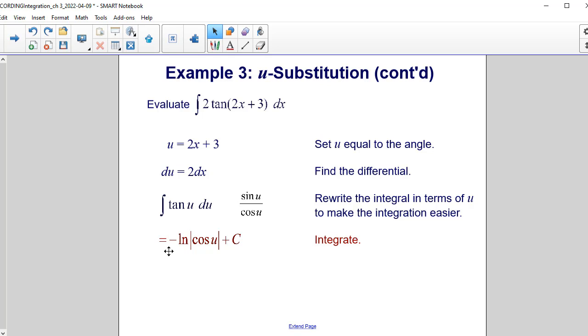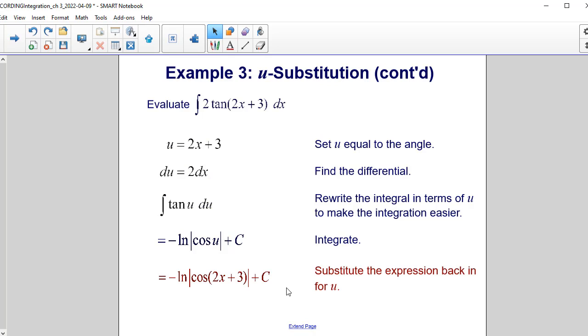So that's how we came up with this answer of negative natural log of cosine u plus c. The final thing we do is substitute the expression back in for u. So recall that u is equal to 2x plus 3. So I replace u with the original 2x plus 3.